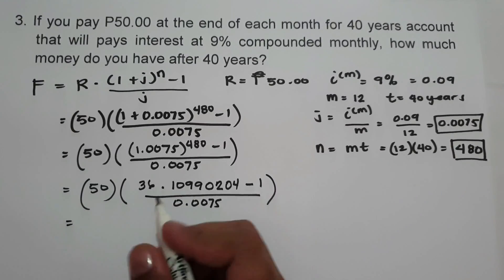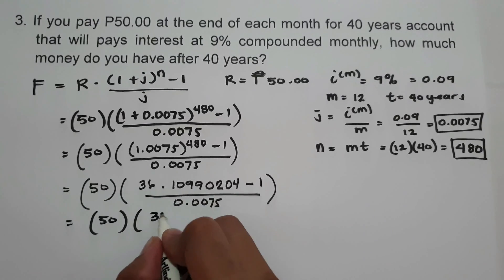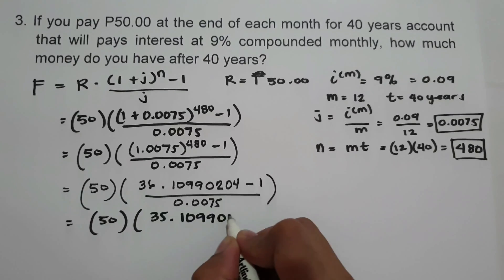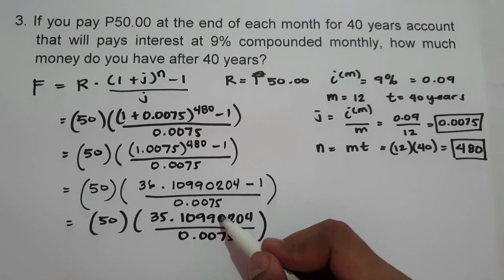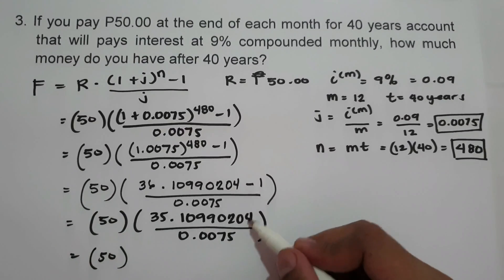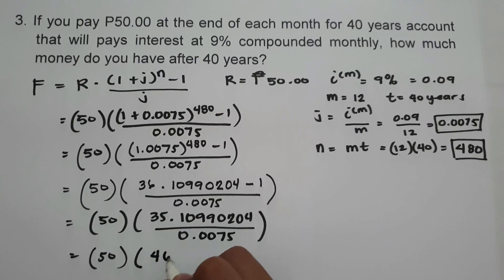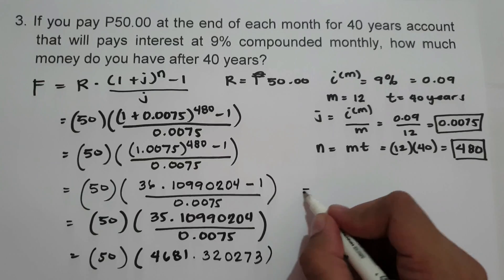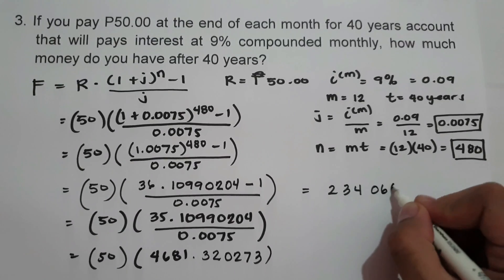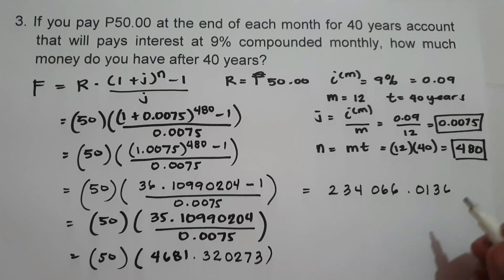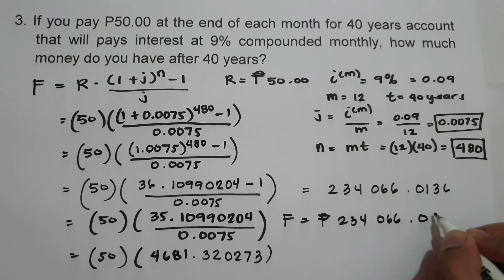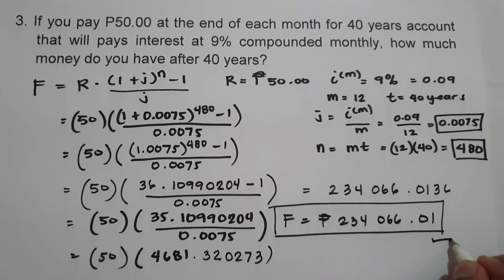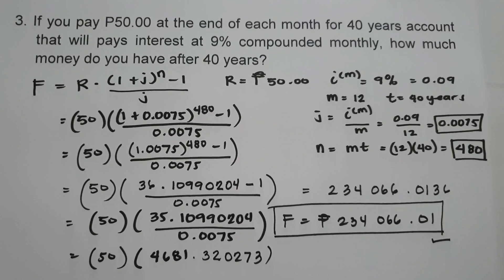Subtracting gives 35.10990204, divided by 0.0075 equals 4,681.320273. Multiplying by 50 gives 234,066.0136, which we write as 234,066.01 pesos. This will be our final answer. I hope you will learn from this lesson. Thank you so much for watching, and God bless us all.